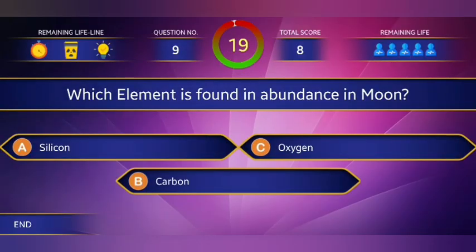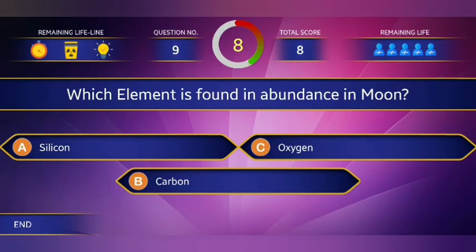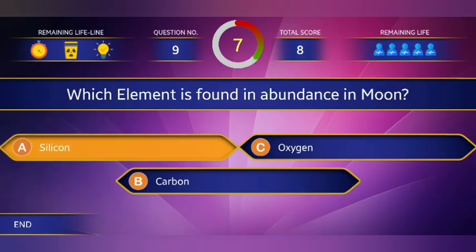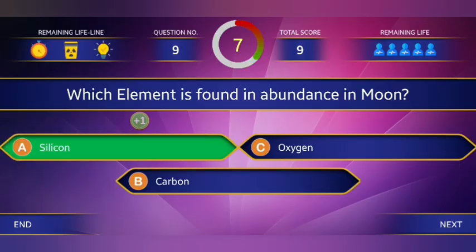Ninth question: Which element is found abundantly on the moon? The answer is option A, silicon.